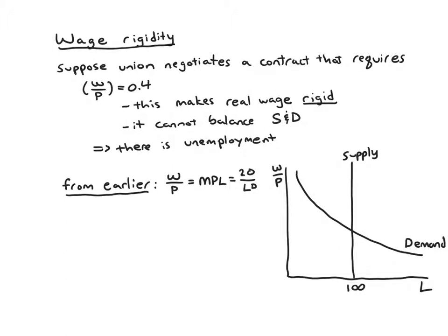So to make it concrete, suppose from the previous slide we have this equation, the real wage equals the marginal product of labor. And the marginal product of labor was 20 over L. And this was the demand equation. So specifically that's LD, the amount of labor demanded. If the real wage has to be 0.4 because of contracts, then we know 0.4 will equal 20 over LD. And we can solve for the amount of labor demanded. It is going to be 50.